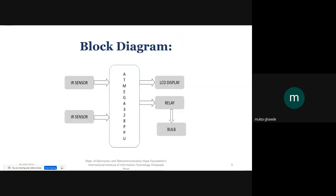This is the main block diagram showing connections between the input, controller, and output. The two IR sensors are given as input to the ATmega controller. The increment and decrement operations will be handled by the controller, and the count will be displayed on the LCD. A relay will be used for switching purposes.